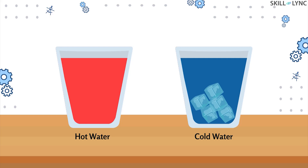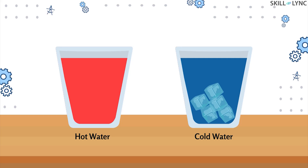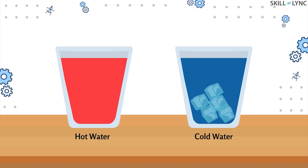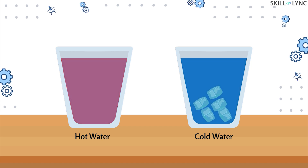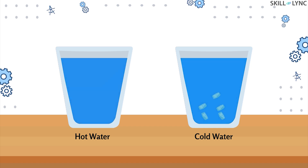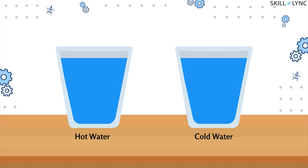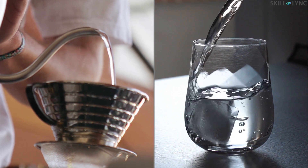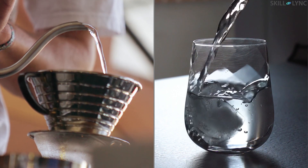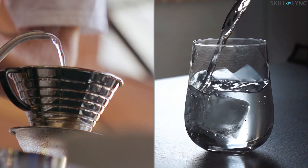Hey guys, welcome to Skill Link. We know that when we leave a glass of hot water and a glass of cold water out in the open for some time, both of them try to reach a thermal equilibrium with the atmosphere. The hot water starts cooling down while the cold water starts getting warmer to reach room temperature. This change in temperature stops when they reach the same temperature as the atmosphere.